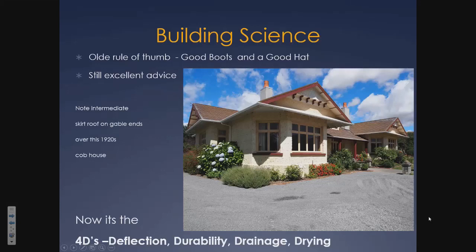We managed to sort that out. The old rule of thumb — good boots, good hat — is still very good advice for any exposed earth wall, particularly in a windy, wet climate. We found this old cob building in the earthquake zone from the Kaikoura earthquake. Very minor damage done to it, but the intermediate roof at the gable end is an absolutely beautiful, elegant solution for getting weather protection to the lower part of the wall.